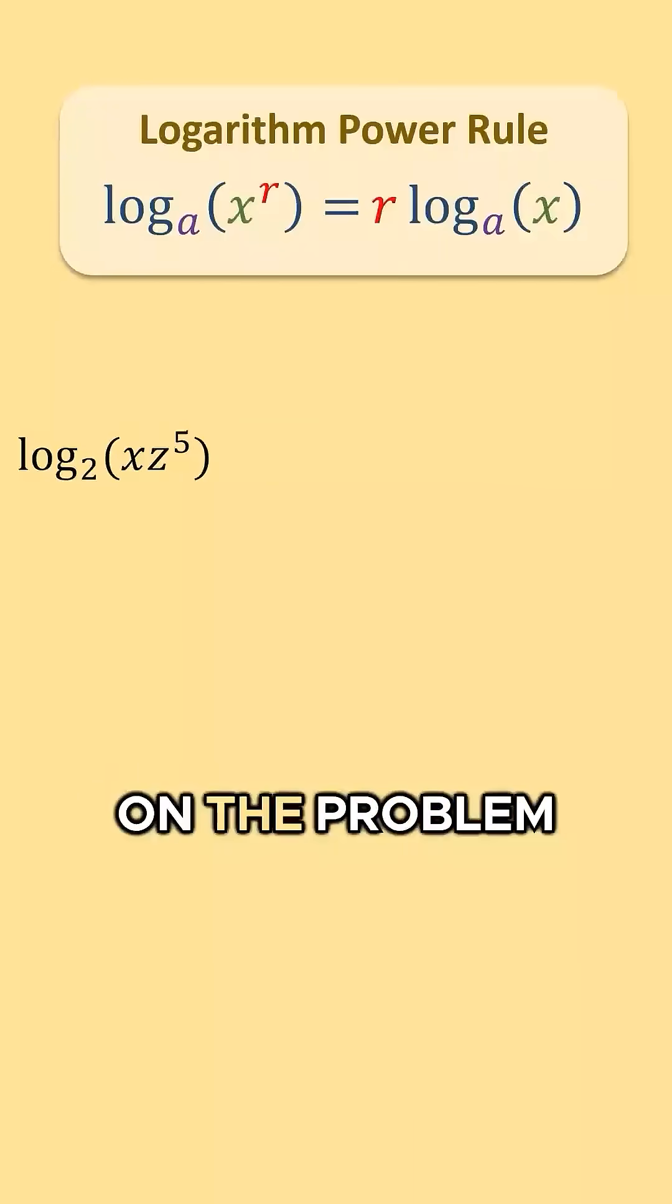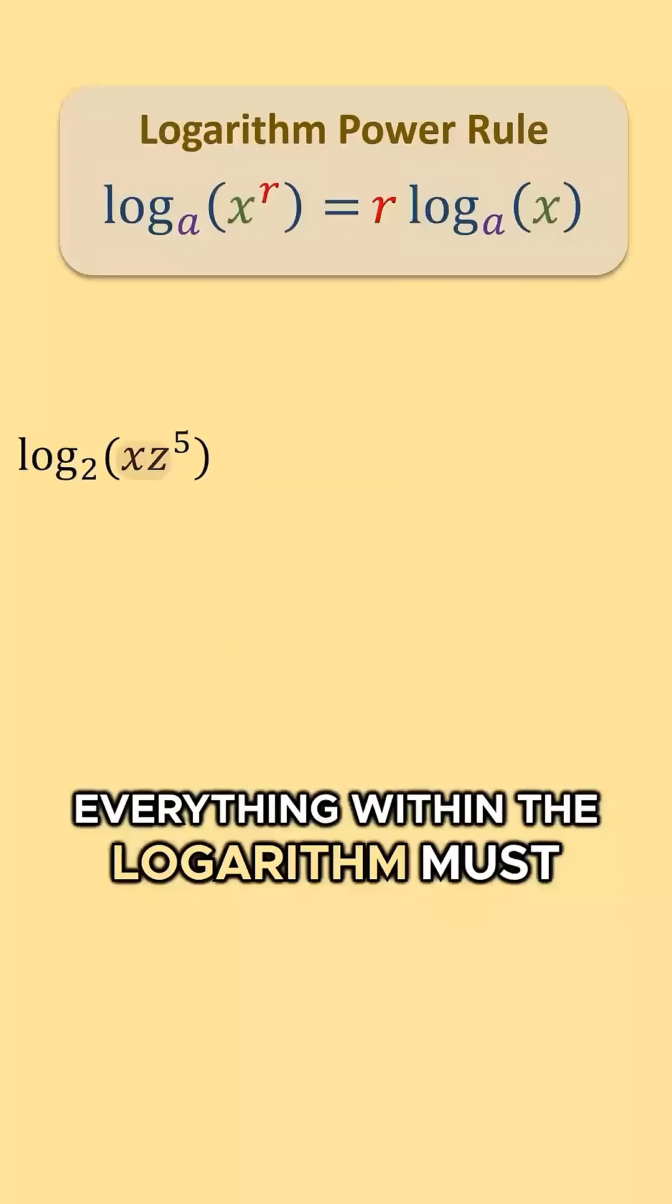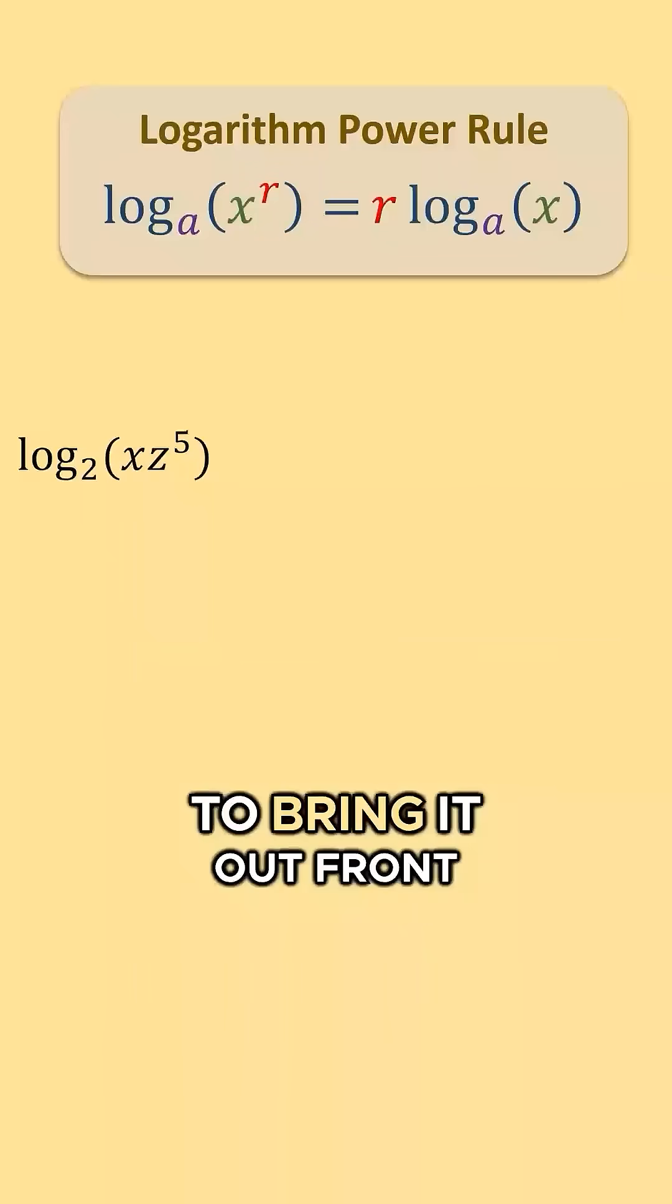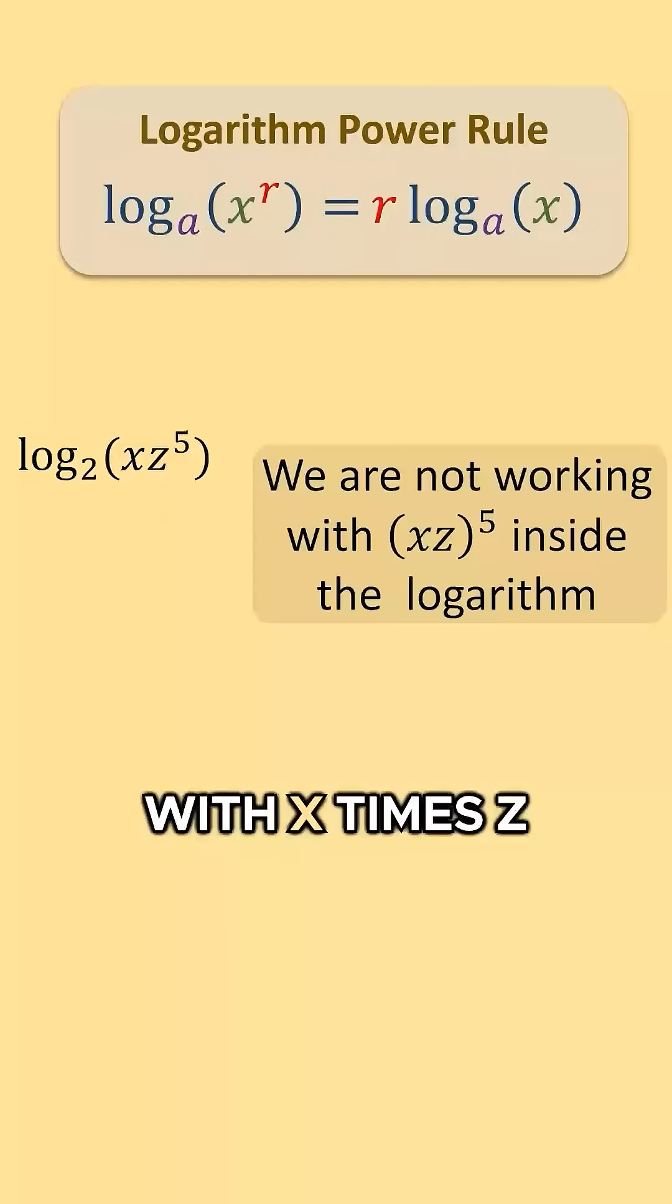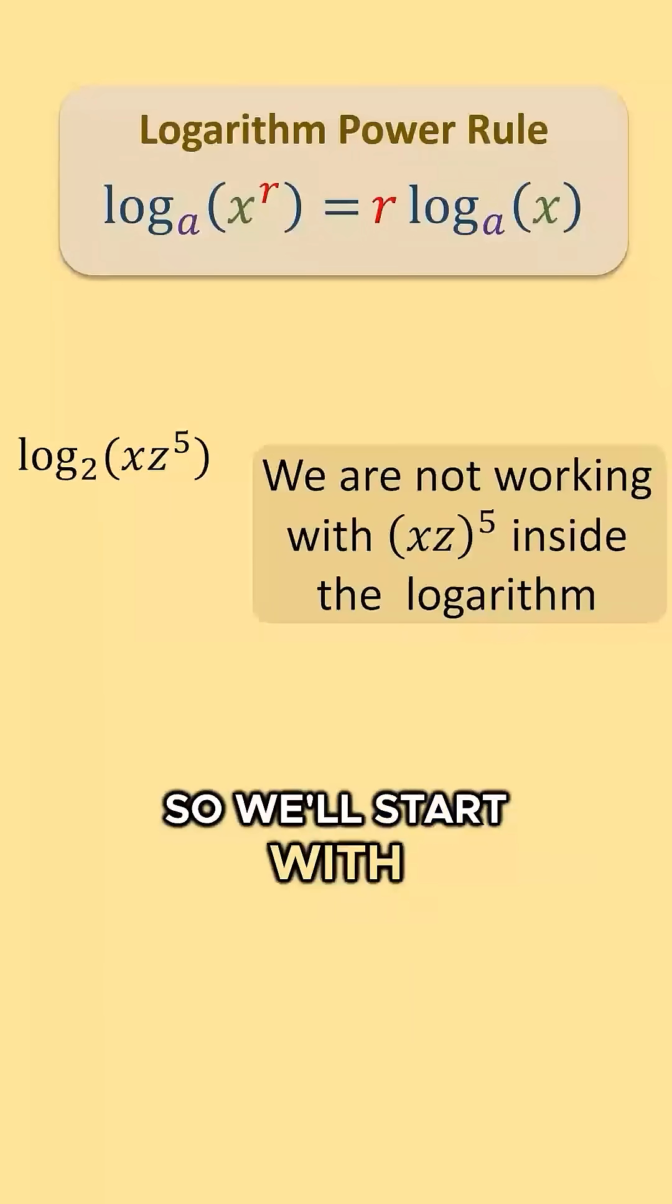Well, that would depend on the problem, but in order to use the power rule, everything within the logarithm must be raised to the power to bring it out front. Since we are not working with x times z all raised to the fifth power, we will not work with the power rule first. So we'll start with the product rule.